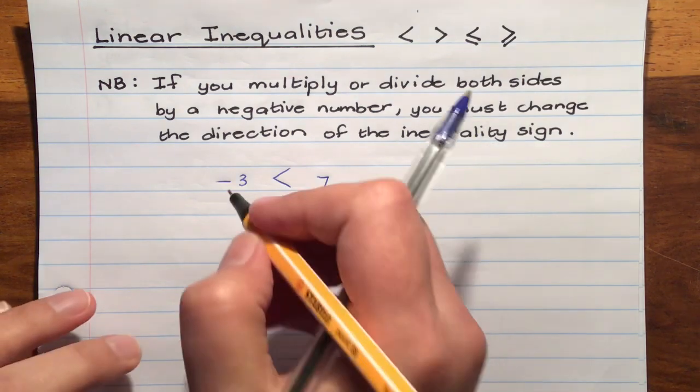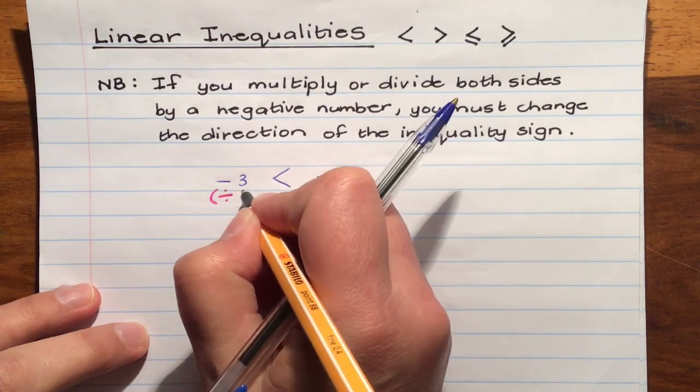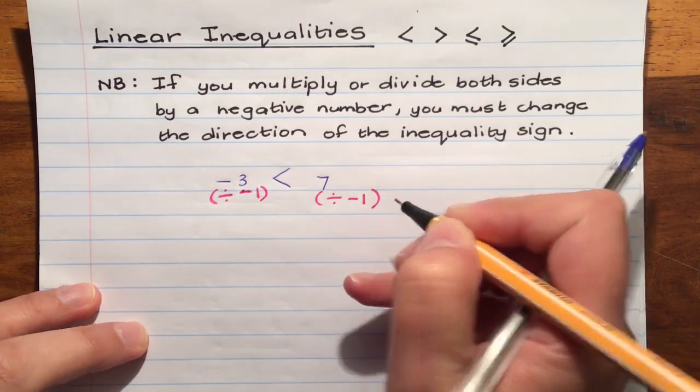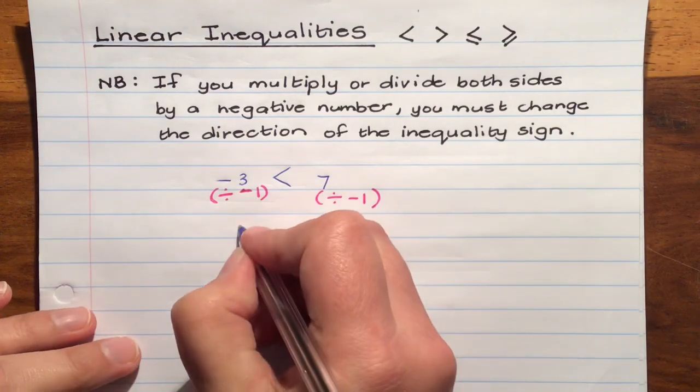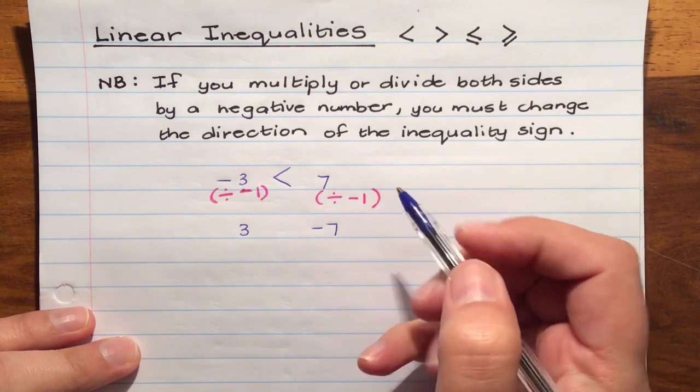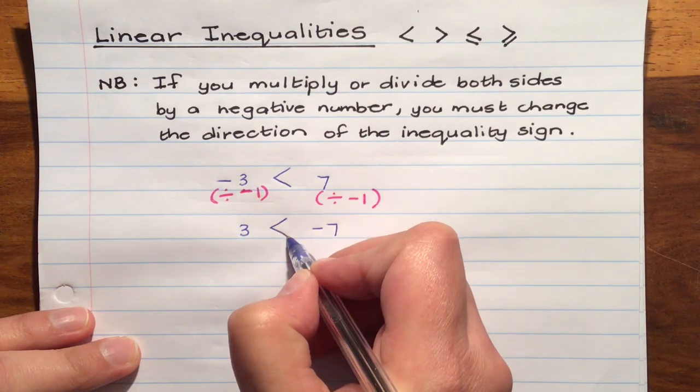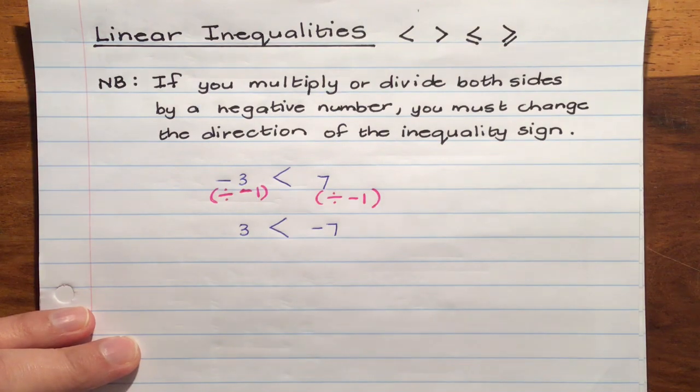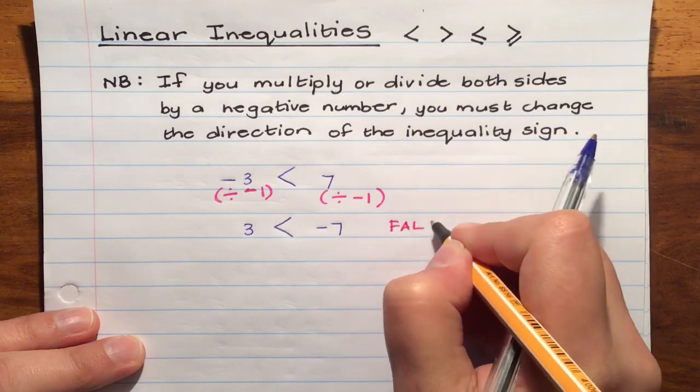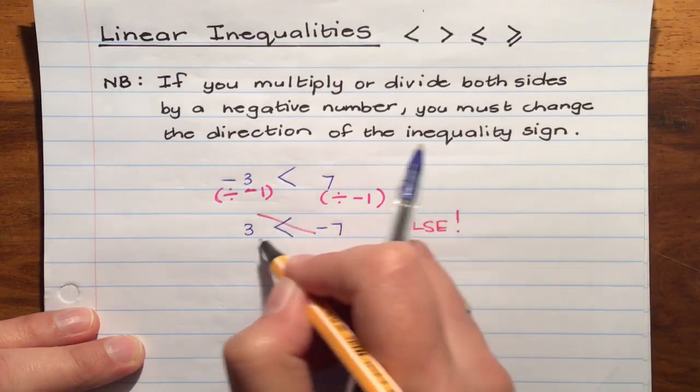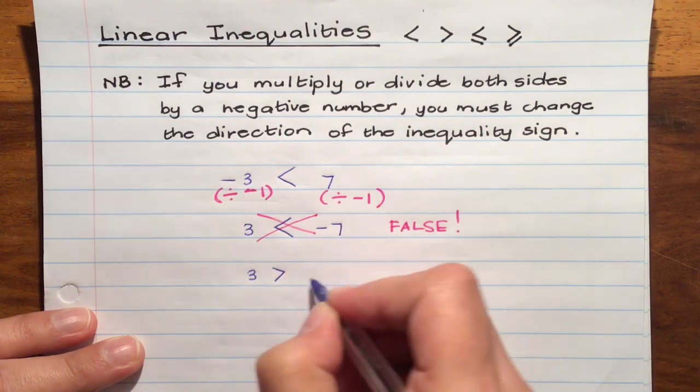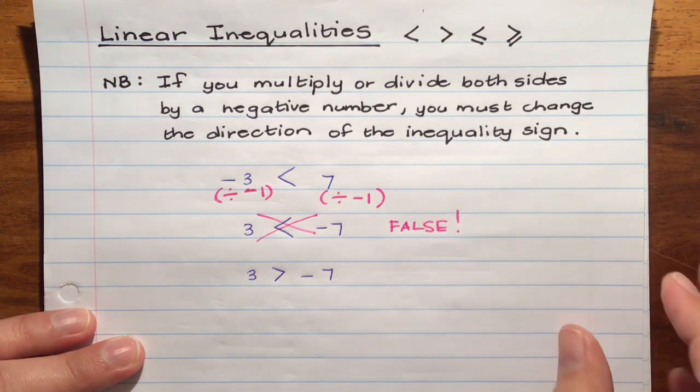So what you do to the one side you do to the other, you're going to divide both of them by negative one. Then we'd get three and negative seven. Now if we had to continue to put our inequality sign this way around that's clearly false. Three isn't smaller than negative seven. So that's the reason why we would swap the sign around so that it becomes true. Three is greater than negative seven. And when we're solving for x the same will apply.